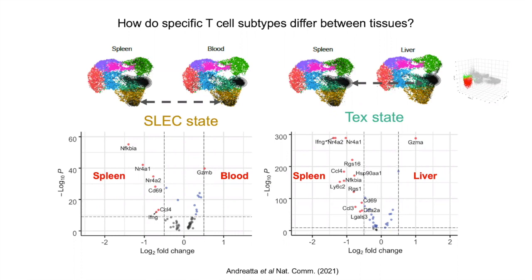Projectiles is able to robustly identify T cell subtypes in diverse conditions. For instance, this T cell state in yellow, known as SLEC, in spleen and blood, or this other T cell state called TEX, both in spleen and liver. But also importantly, it allows us to identify condition-specific transcriptional differences that deviate from the reference states. In this case, we can see tissue-specific signals including upregulations of genes such as NR4A1 and CD69, which are likely associated with increased antigenic stimulation in spleen compared to other tissues.